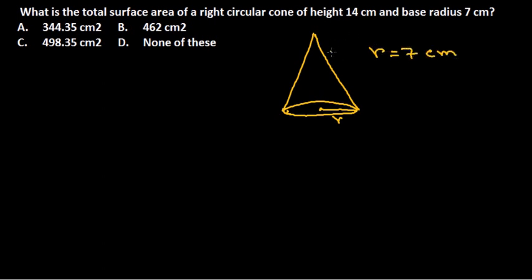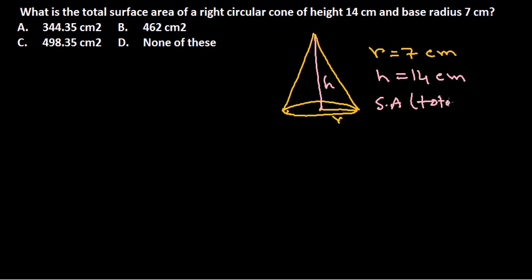The height of the cone — this is the length we are talking about — is 14 centimeters as provided. We need to find the total surface area. Remember, there are two types of surface area: the curved surface area and the total surface area. In this case, we need to calculate the total surface area.